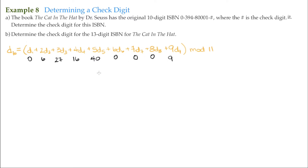Adding all of this up modulo 11, the sum comes out to be 98. Now, 98 mod 11: 11 goes into 98 eight times with 10 left over, so the check digit is 10. That's one of the quirks about modulo 11 — there is a possibility that you end up with a two-digit check digit, and the only two-digit value that can come up is 10.